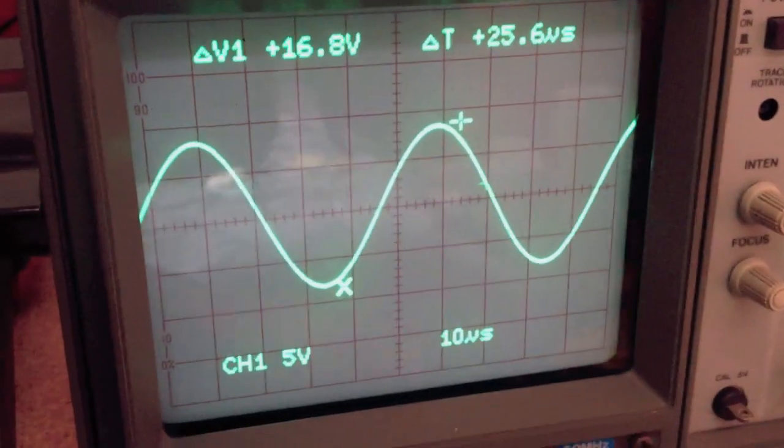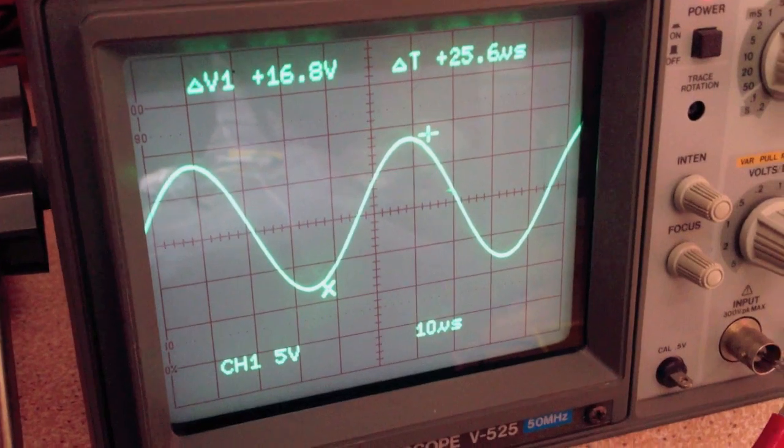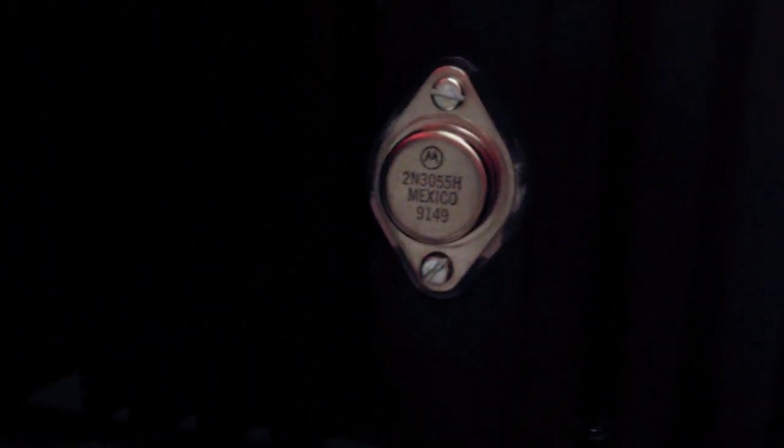That's pretty flat from 20 hertz right up to 20 kilohertz, so that's working well for a homemade amp. Of course that's with the 2N3055s, so I'm very pleased with that. That's the Zen.